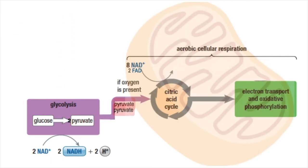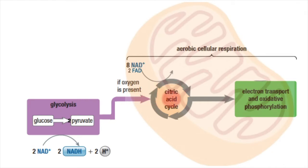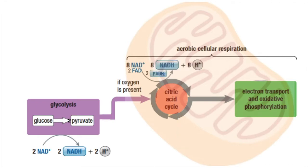Meanwhile, the pyruvate goes into the mitochondria, where it is oxidized, a carbon dioxide is removed from it, and it is converted into acetyl-CoA, which then enters the Krebs cycle, or citric acid cycle. In the citric acid cycle, the carbons in the molecule are lost as carbon dioxide gas as the molecule is further oxidized, and then two more ATP molecules are released, which can go on to provide energy for the cell.